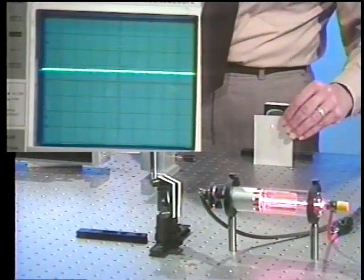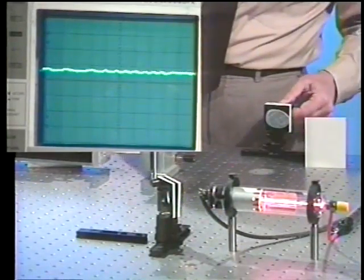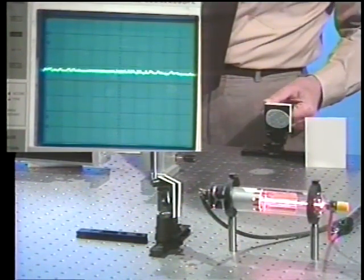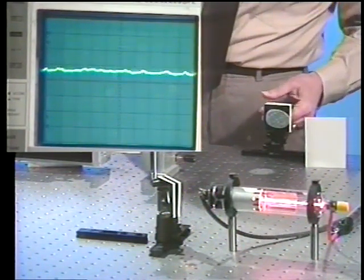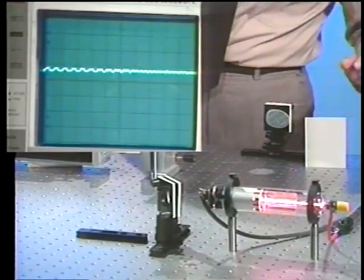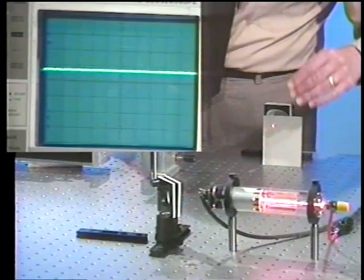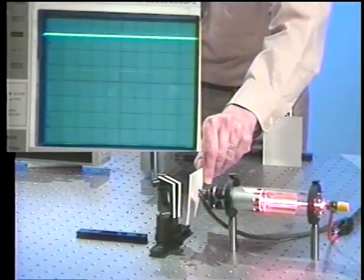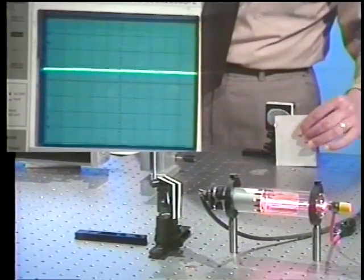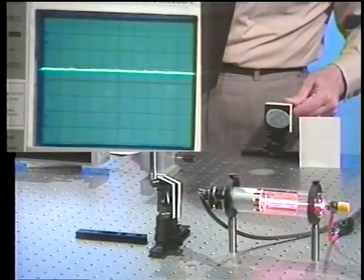If I block it again, it's nice and quiet. And if I unblock it, you can see I get about 15% or more intensity fluctuations. Let me remind you that zero is over here. There's the output without reflection, and here is the output with reflection.